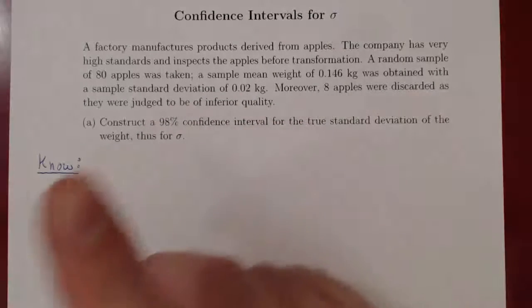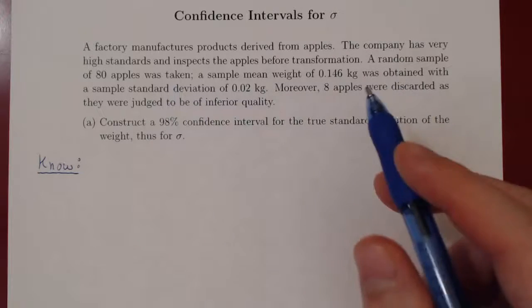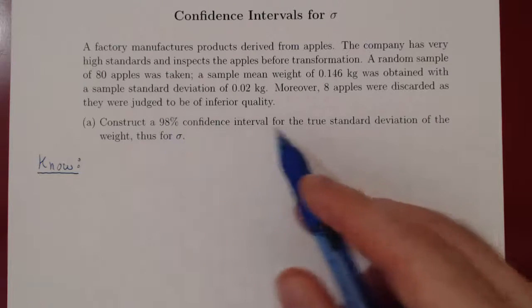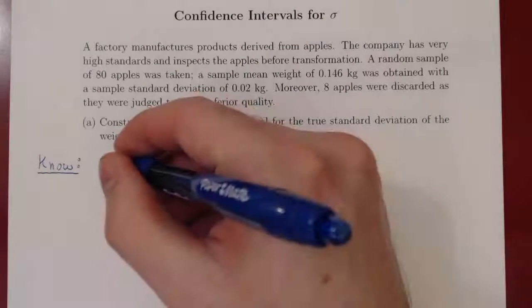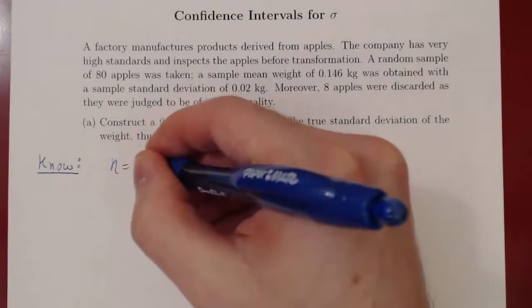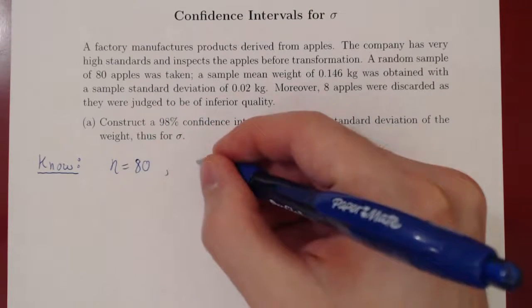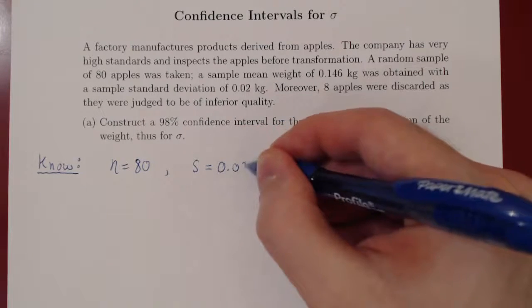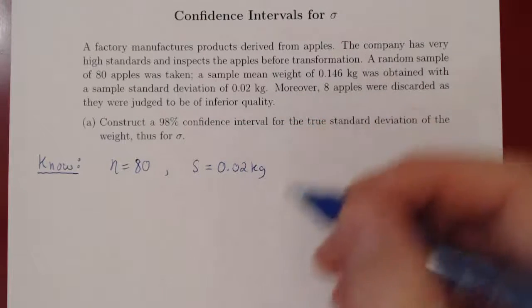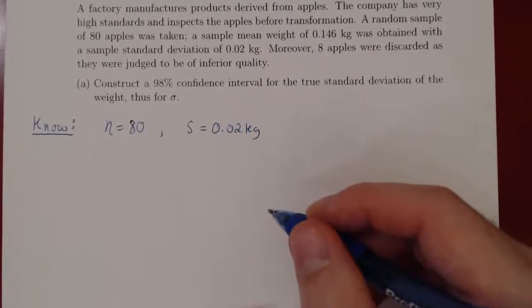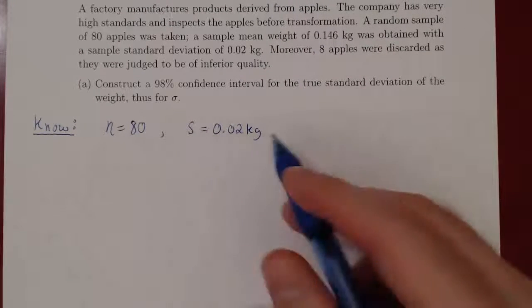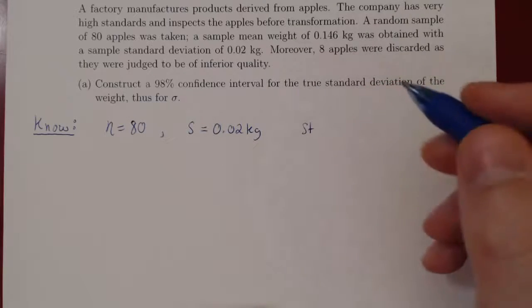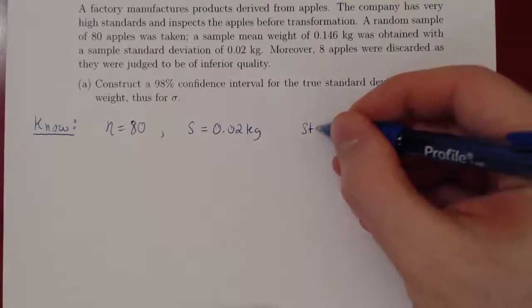All we need from this problem to build our 98% confidence interval for sigma is the sample size — we sampled 80 apples — and our sample standard deviation, which we found to be 0.02 kilograms. The only thing we need now is our statistic, which we'll use to construct our 98% confidence interval.